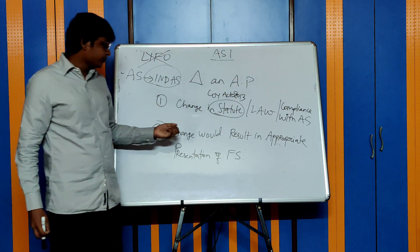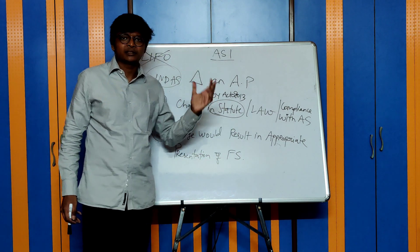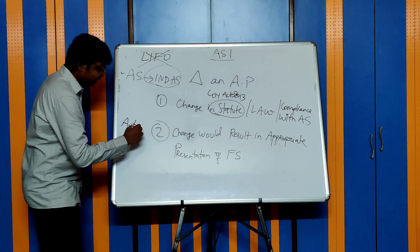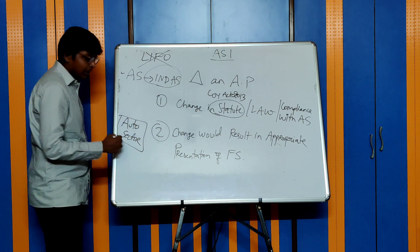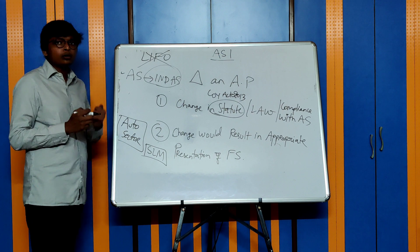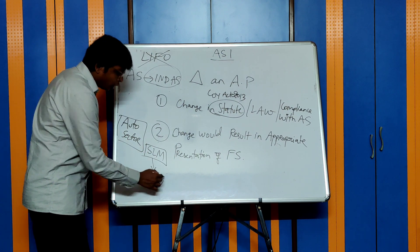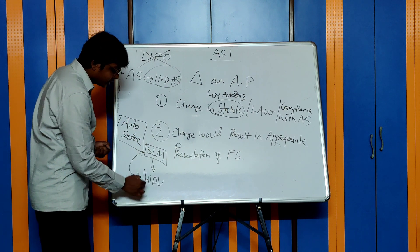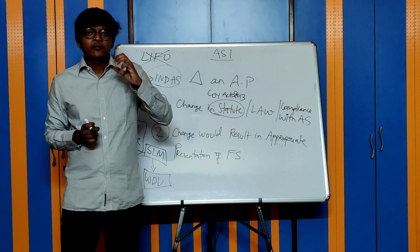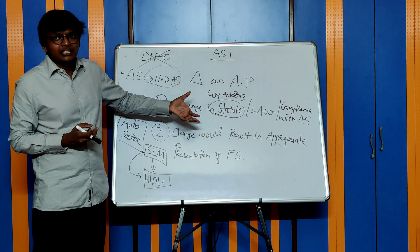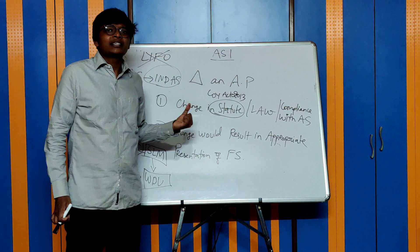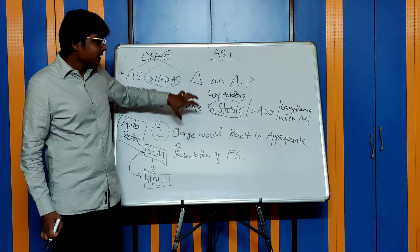The second case: you can change an accounting policy when the change would result in a more appropriate presentation of financial statements — leading to better presentation. For example, if all companies in the auto sector are following straight line method for plant and machinery and they decide to change to WDV, they will all change from SLM to WDV for better presentation. The reason could be that the quality and technology of the assets changes, so the usage pattern varies and the method changes accordingly. These two points are very important exam questions.